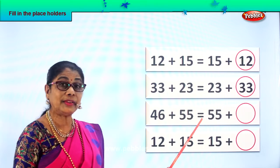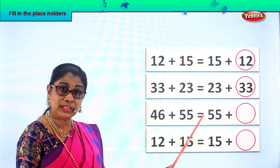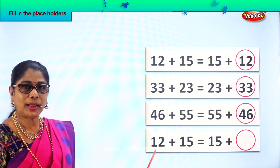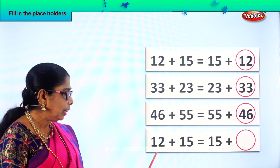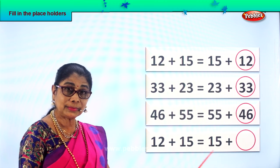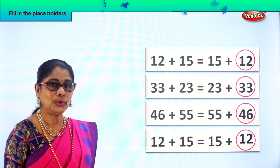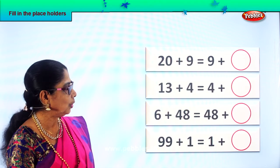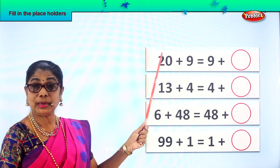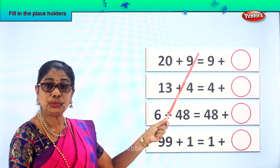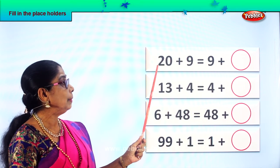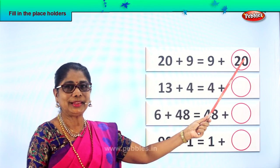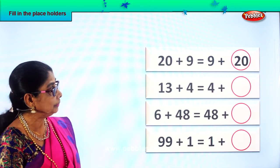What is forty-six plus fifty-five equal to? Forty-six plus fifty-five is equal to fifty-five plus forty-six. What is twelve plus fifteen? Twelve plus fifteen is equal to fifteen plus twelve. Now you learned how to fill in the placeholders. Good. What is twenty plus nine? Twenty plus nine is equal to nine plus twenty. Good, now you know how to fill in the placeholder.